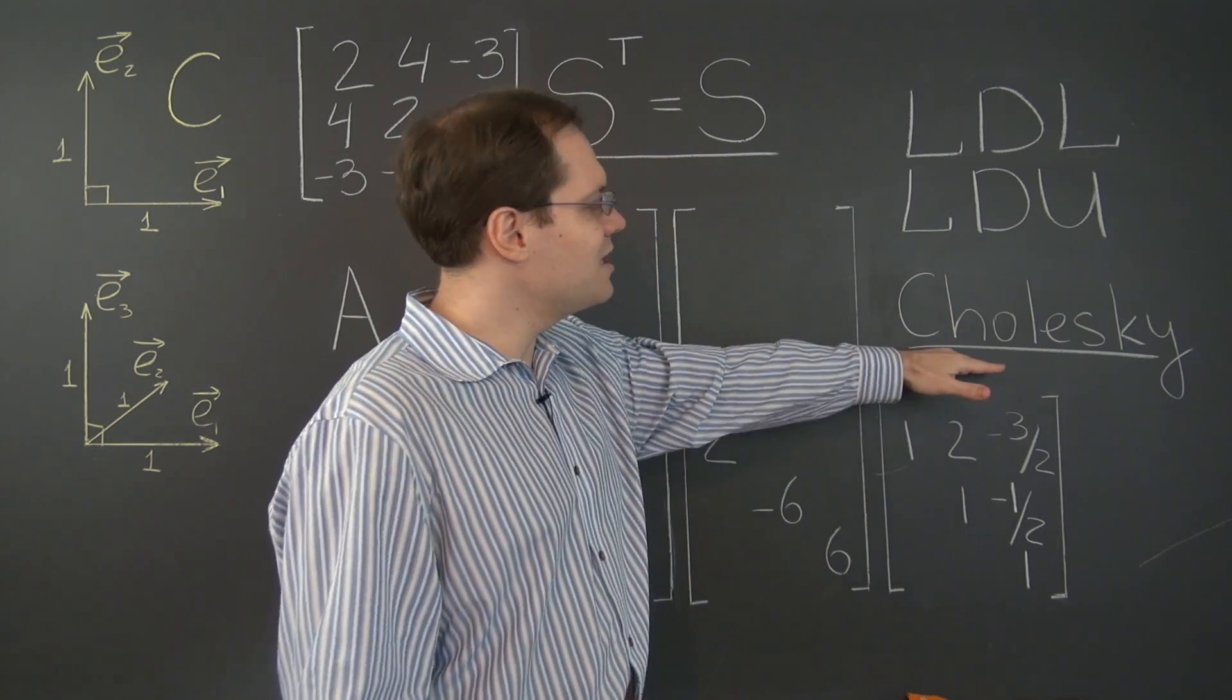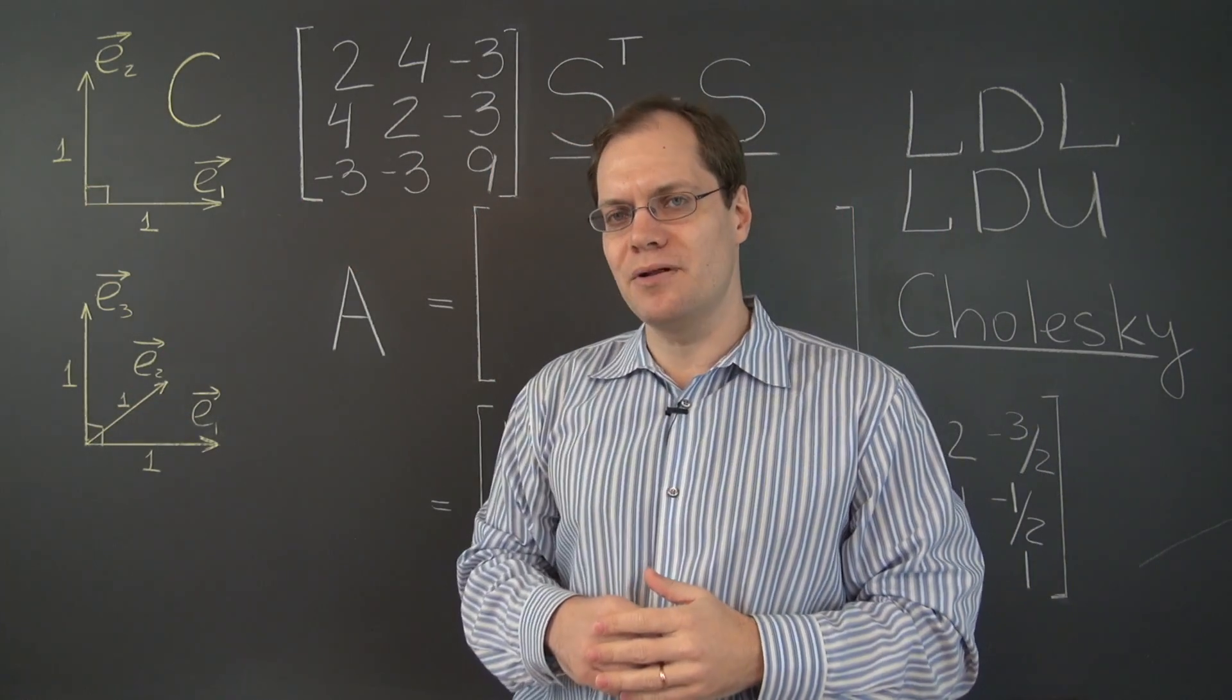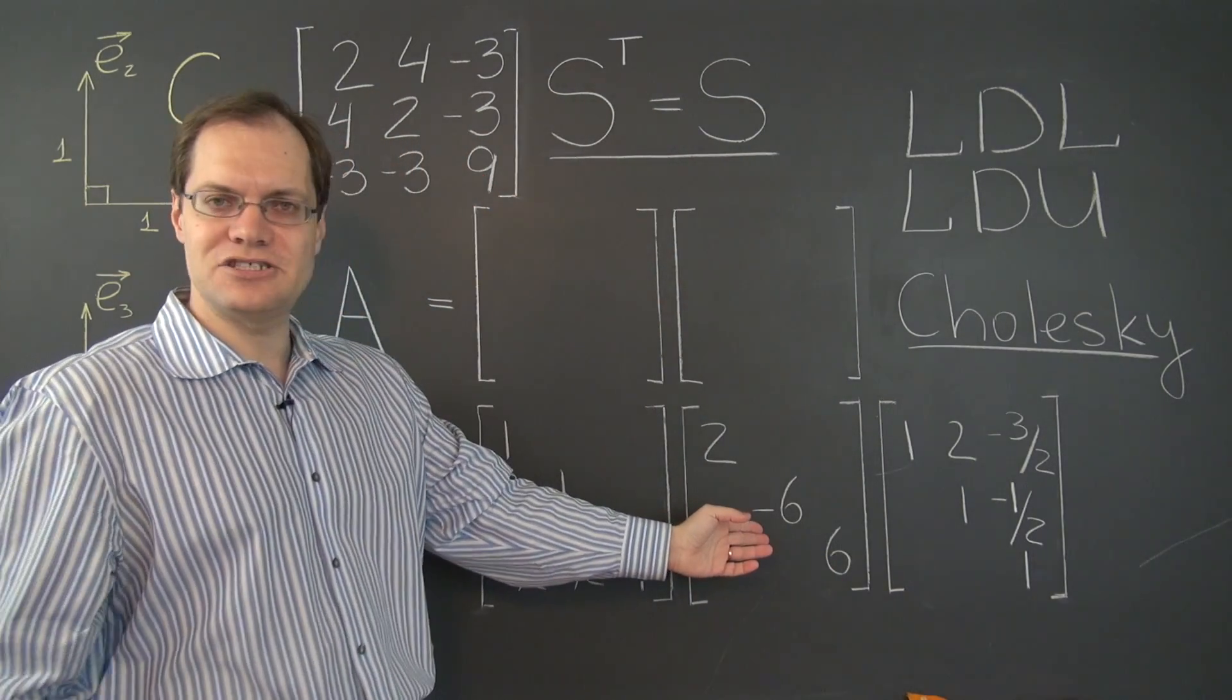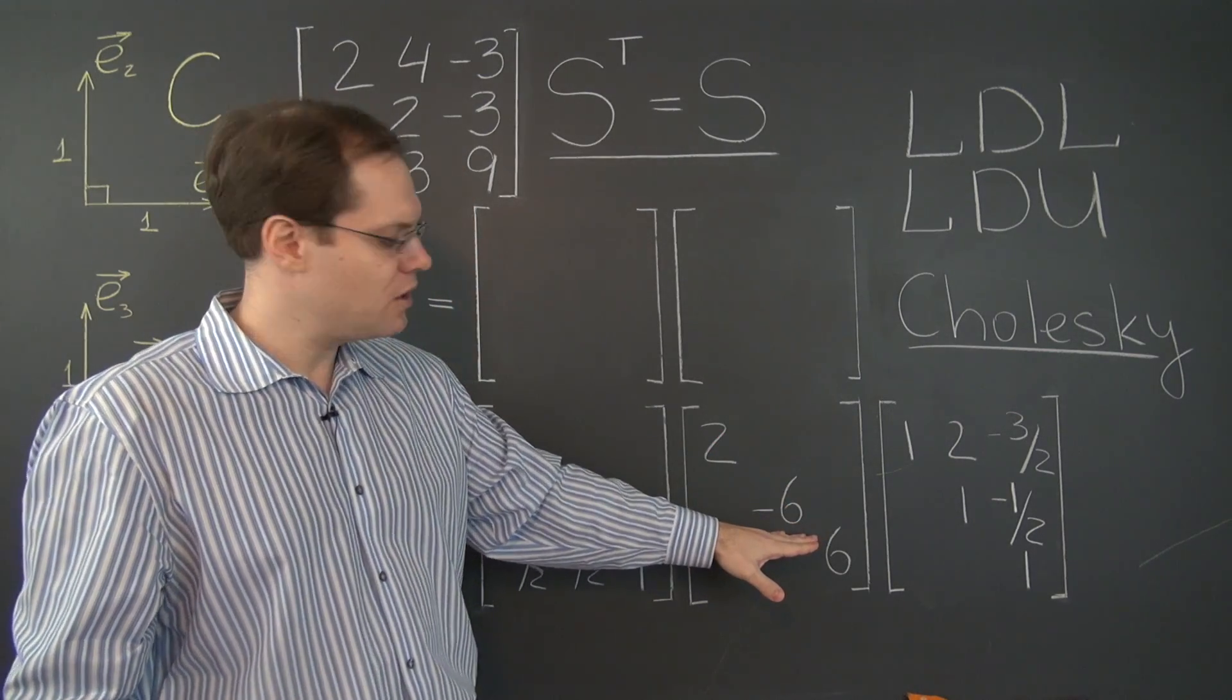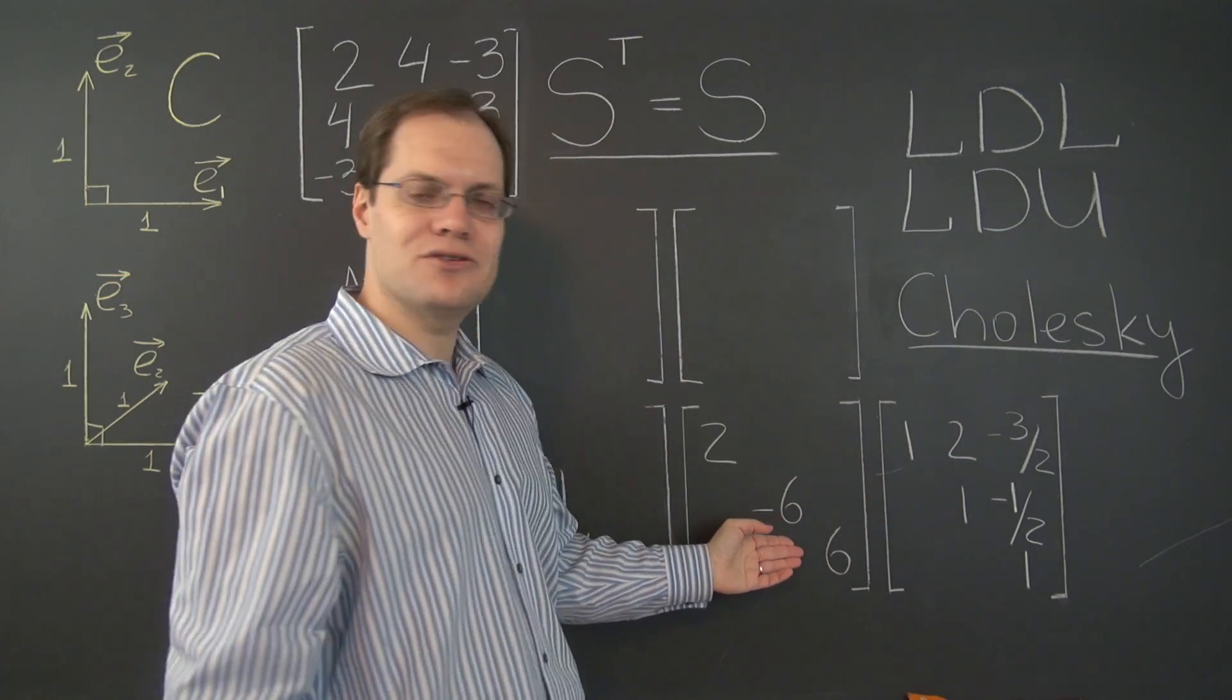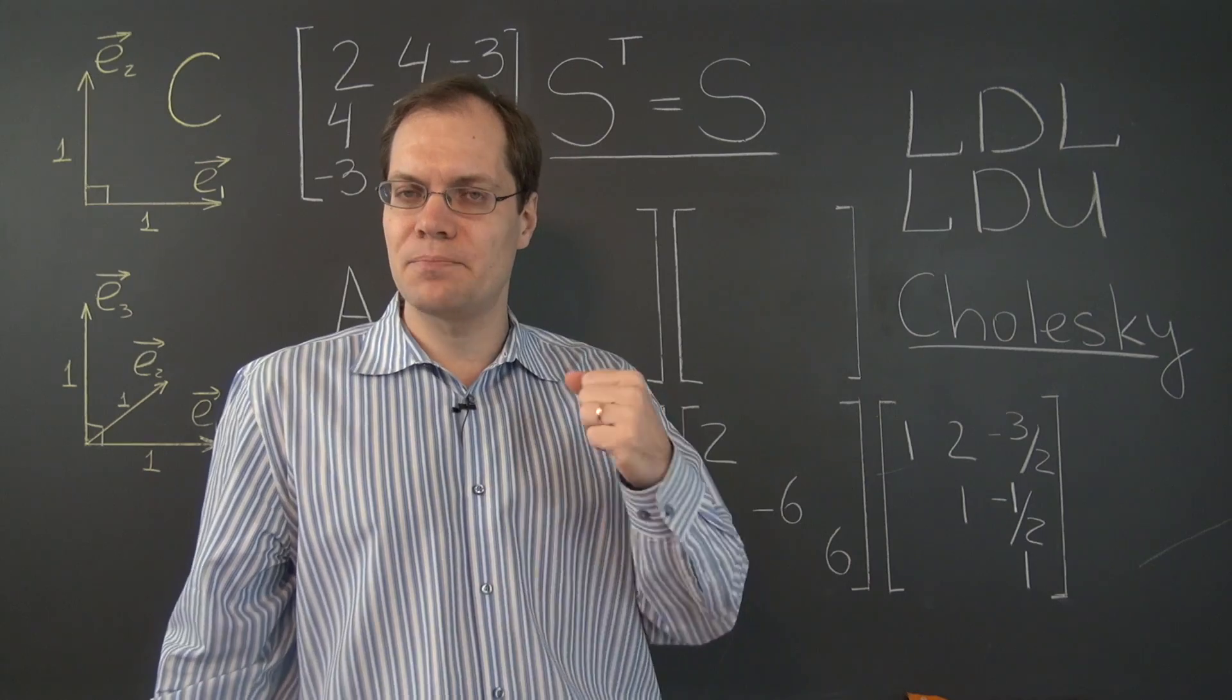So Cholesky decomposition. When we were discussing the LDU decomposition, we used this matrix as an example, which has a negative pivot. If you perform Gaussian elimination on this matrix, you'll end up with a negative pivot, and therefore with a negative number on the diagonal of the matrix D. So matrices like this don't have a Cholesky decomposition. The Cholesky decomposition is only possible if all of the pivots are positive.